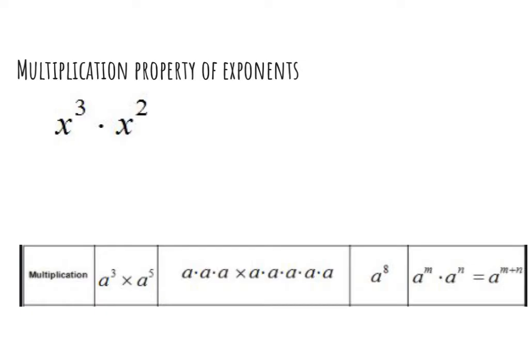So when we're dealing with exponents, we have some properties or laws that we can use to simplify expressions. Our first law or rule is going to be known as the multiplication property, and it can be used whenever I have the same base. Remember that the base is the large number that the exponent is attached to. Because it's the same, I'm going to keep the base and then I'm going to take the exponents and add them together.